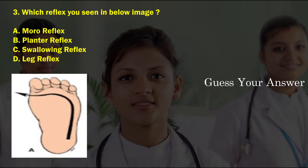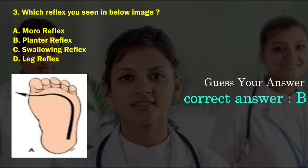Which reflex do you see in the below image? Option A: Moro reflex, option B: plantar reflex, option C: swallowing reflex, option D: leg reflex. The correct answer is plantar reflex.